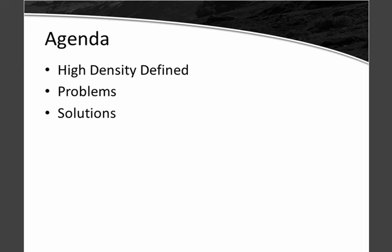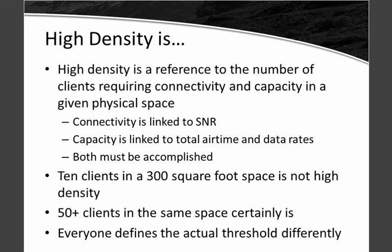So how do we define high density here at CWNP? We're vendor neutral, so we don't say high density is implementing a certain number of a specific vendor's APs. Instead, our definition is: high density is a reference to the number of clients requiring connectivity and capacity in a given physical space. High density is linked to two factors — the number of clients, and also the capacity demands of those clients. Connectivity is linked to SNR — signal-to-noise ratio — and capacity is linked to total air time. There's only so much time in a channel, and that defines the capacity.